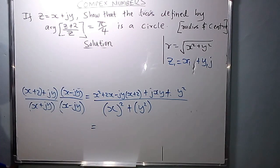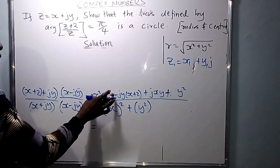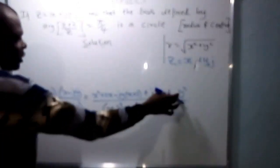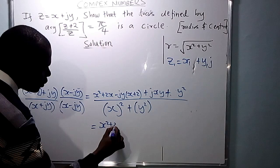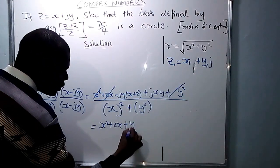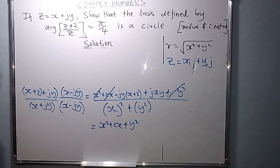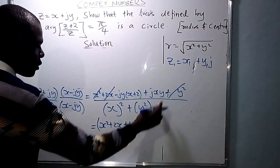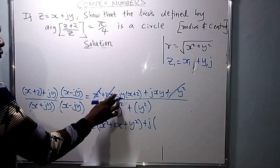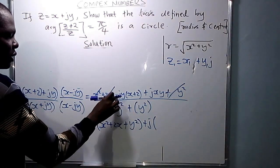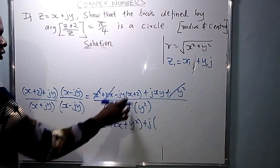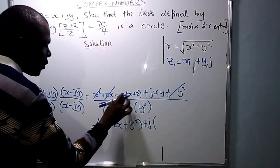So in the numerator, we put real parts on their own and imaginary parts on their own. The real parts without J are: X squared plus 2X plus Y squared. Then we collect the parts with J, factorizing J outside.